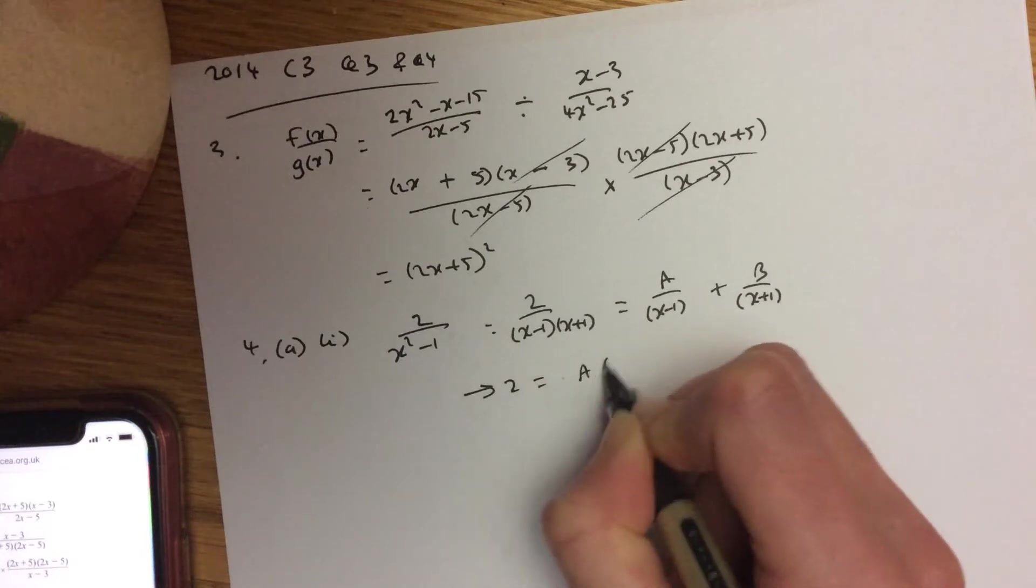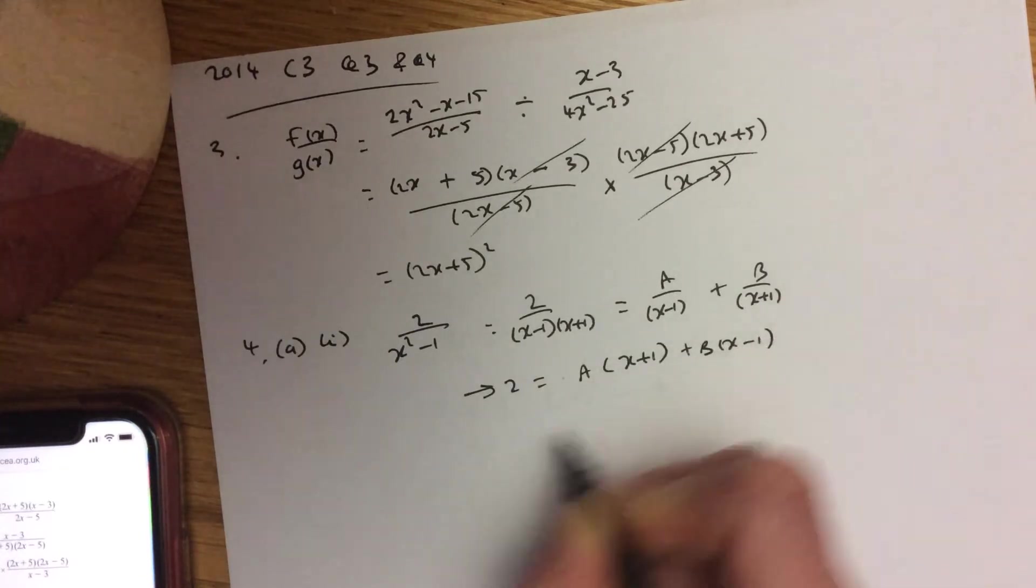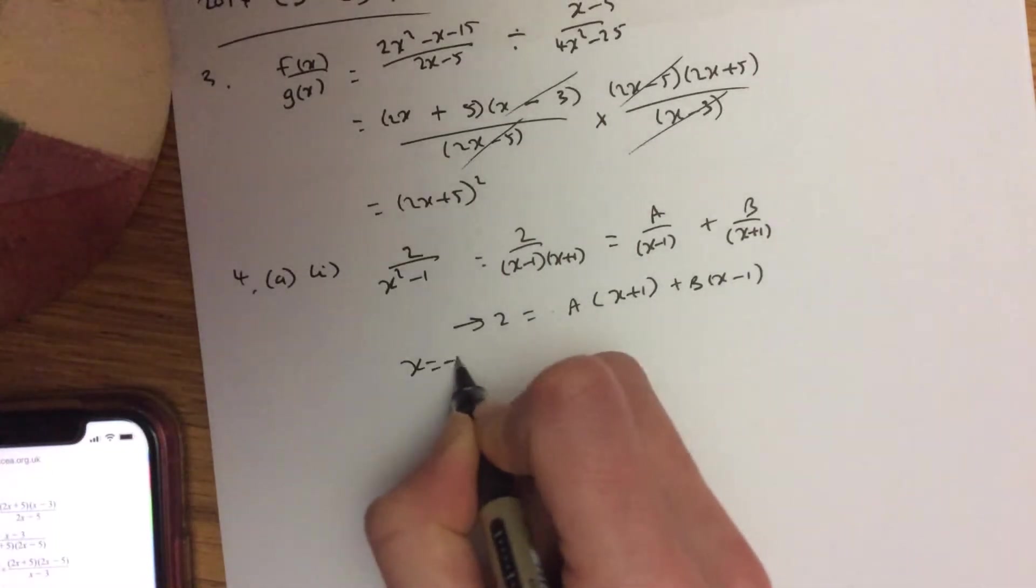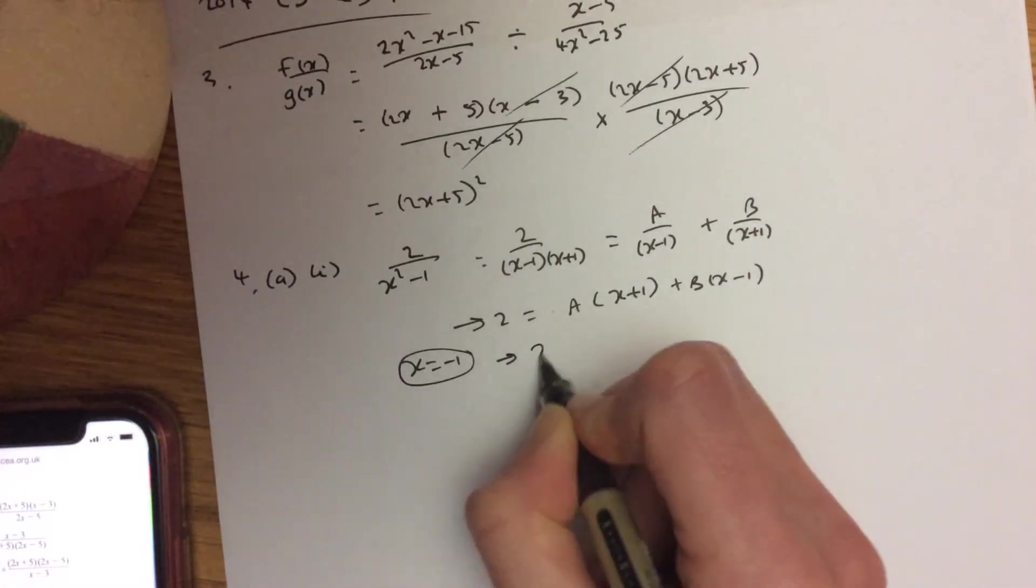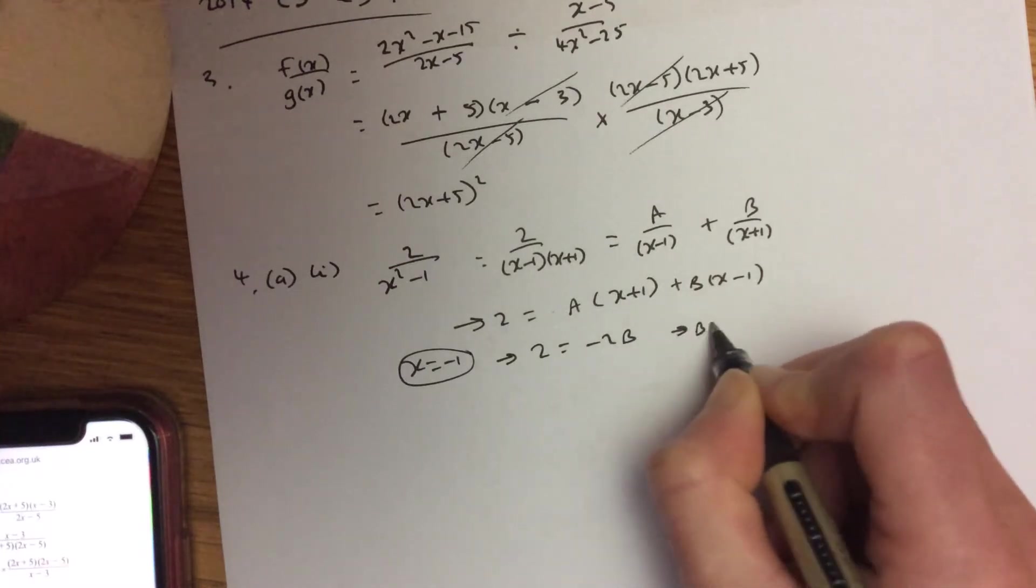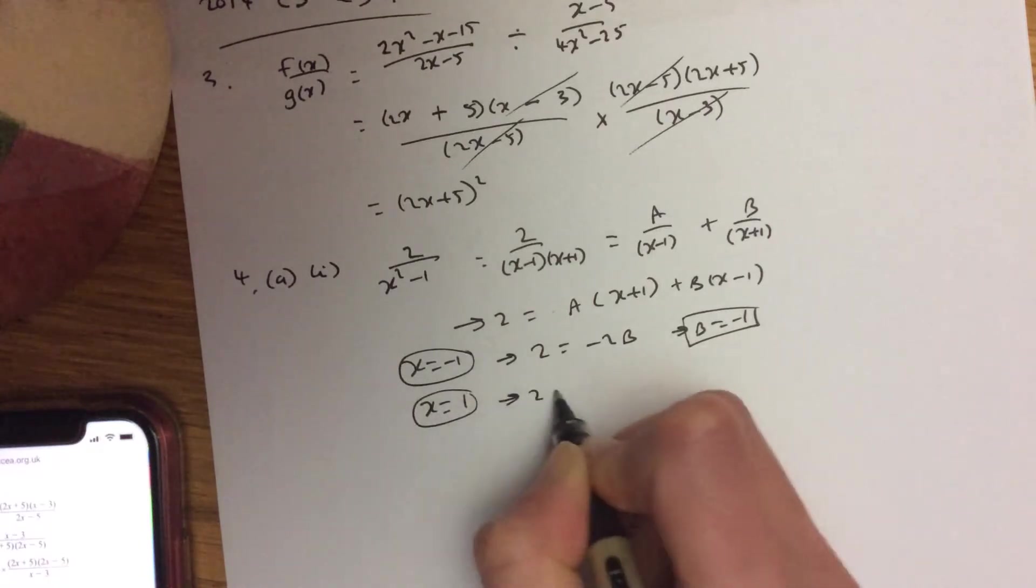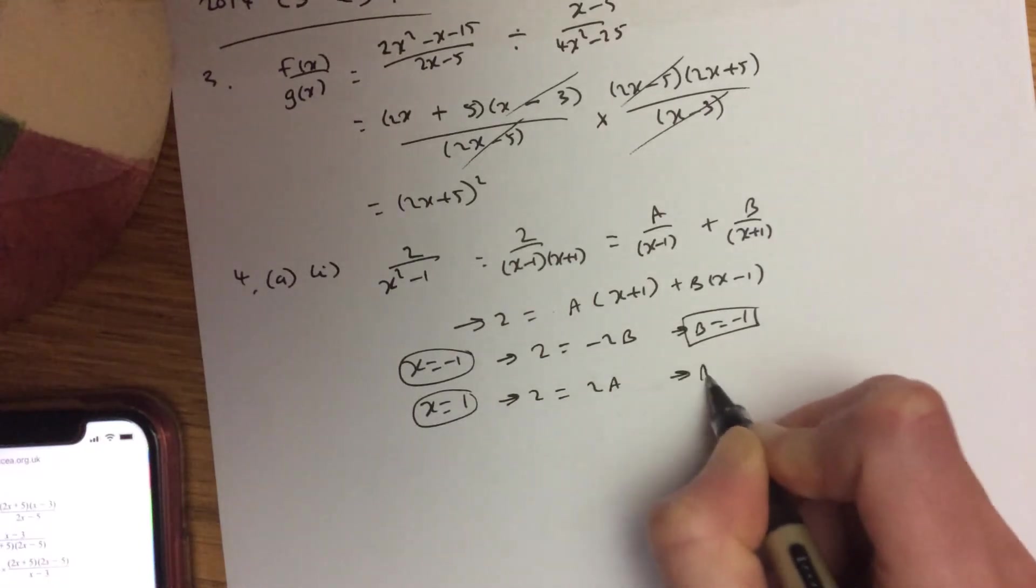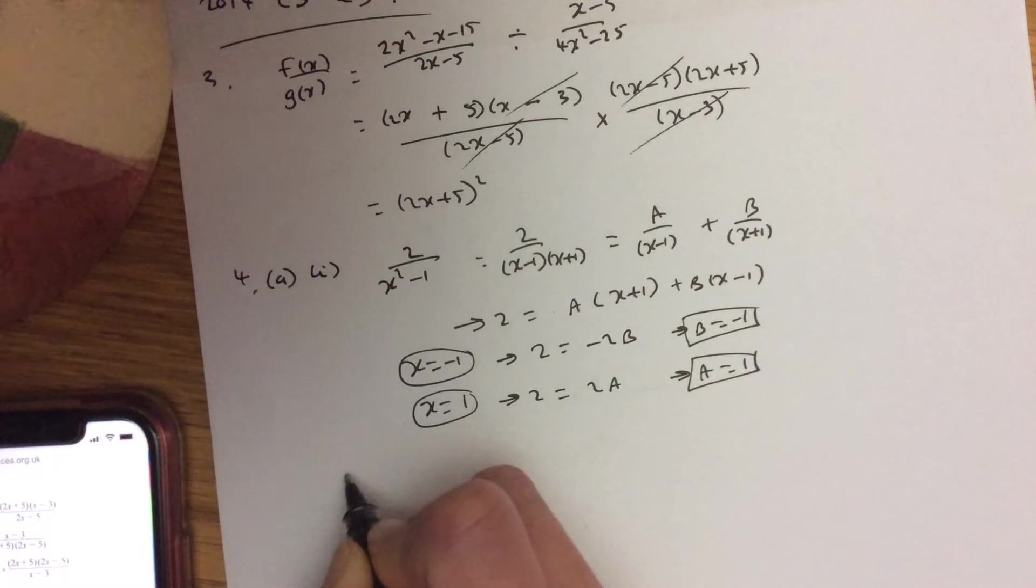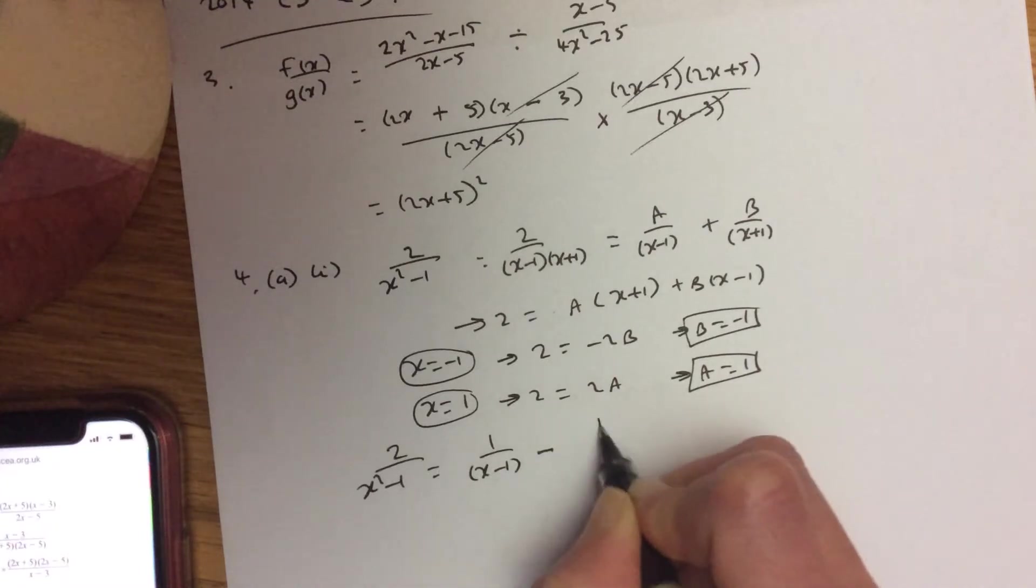Then do the tops. So we need an extra x plus 1 here, and we need an extra x minus 1 over here. Put x to be minus 1. So this is 2. That disappears. And you get minus 2b. So b is minus 1. Then put x equals 1. So you have 2 equals 2a. So a equals 1. So therefore, your expression is 1 over x minus 1 minus 1 over x plus 1.